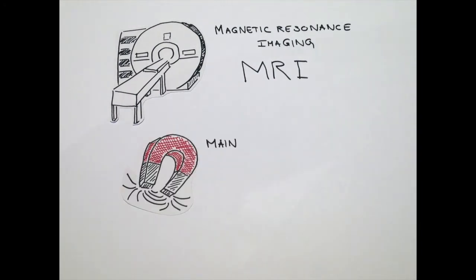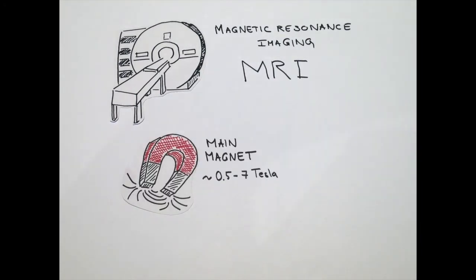Magnetic resonance imaging, in short MRI, uses magnetic fields to create images of the body. The main magnetic field in MRI is a strong static field that is never changed and is always on.